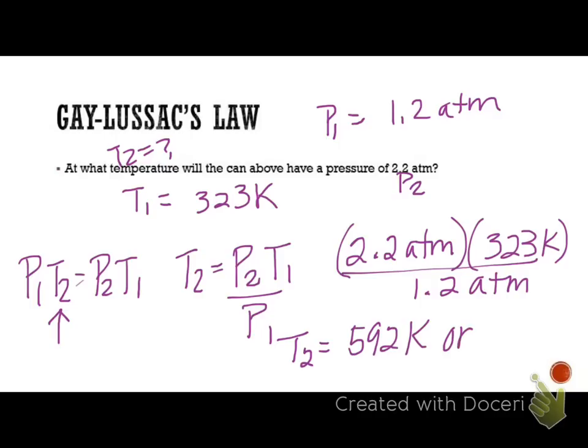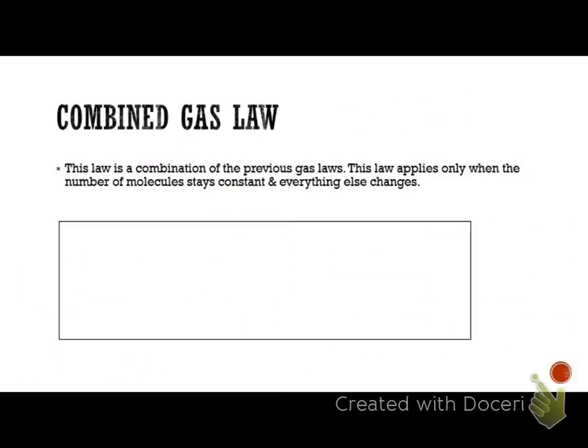Or if I wanted to convert it back into Celsius, I would subtract 273 and I would get 319 degrees Celsius. Let's do a double check. Our pressure increased, so we expect our temperature to increase. Of course, it did. It went from 50 degrees Celsius to 319. That's quite a bit of an increase. But we increased our pressure by a whole atmosphere, which is quite a bit.